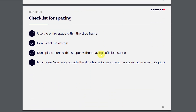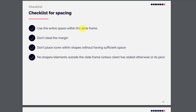Checklist for spacing: use the entire space within the slide frame; don't cramp your content; don't steal the margin — have proper margin all around your content; don't place icons within shapes without sufficient space; and no shapes or elements outside the slide frame unless the client has specifically asked for it.